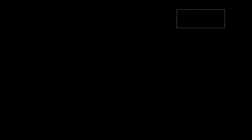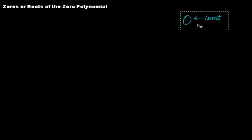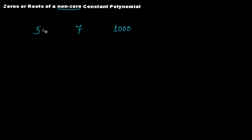Then we'll talk about the zero polynomial. So 5, 7, 1000, and let's take one more — let's say one lakh. Five is a constant polynomial, seven is a constant polynomial, thousand is a constant polynomial, and one lakh is a constant polynomial.